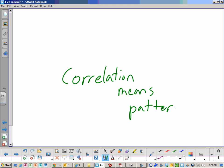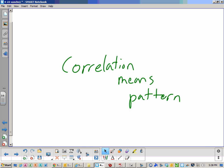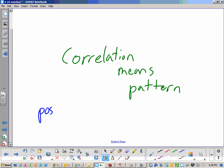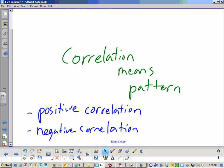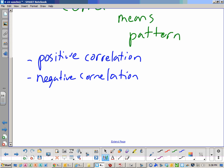Correlation means pattern. You can see a pattern, right? And there's different types of patterns. There's a positive correlation, which means that the pattern is tending to go up. And then there's also negative correlation, which tends to mean that the correlation is going down. There's also another one, if it's neither. Or it's what's called no correlation.